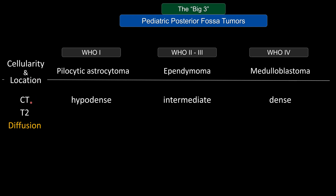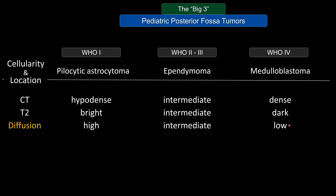Cellularity also translates into MRI appearance. Because pilocytic astrocytoma is hypocellular, it tends to look bright on T2 and has high diffusivity — no restricted diffusion, in fact facilitated or increased diffusion. Medulloblastoma, the hypercellular tumor, tends to look darker on T2 and has low diffusivity, presenting as a lesion with restricted diffusion compared to adjacent normal tissue. Ependymoma is again somewhere in between.